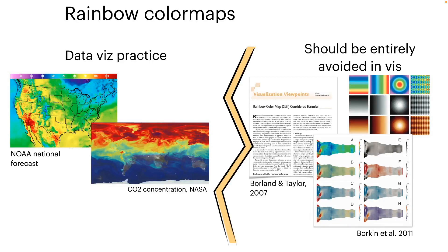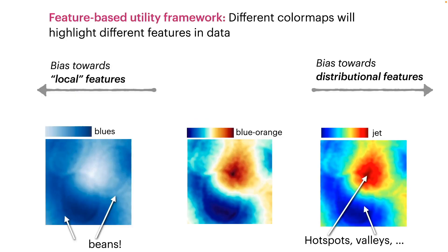Rainbow color maps are a widely researched topic in data visualization, and while much research suggests that they are harmful to data interpretation, rainbows continue to be featured heavily in visualization practice. To explain this gap,